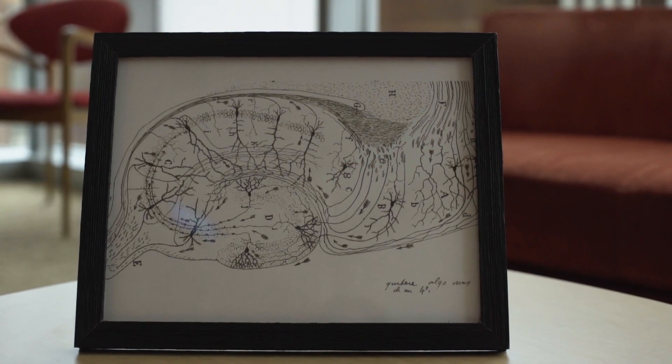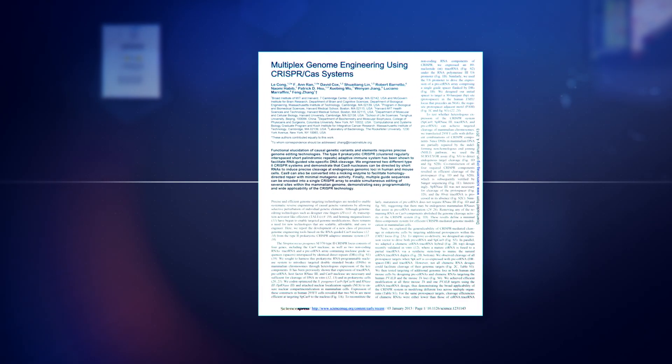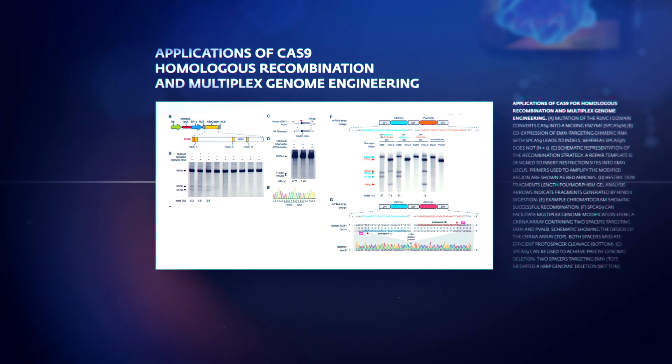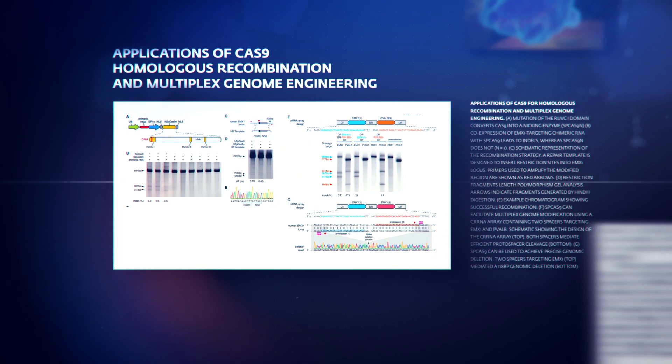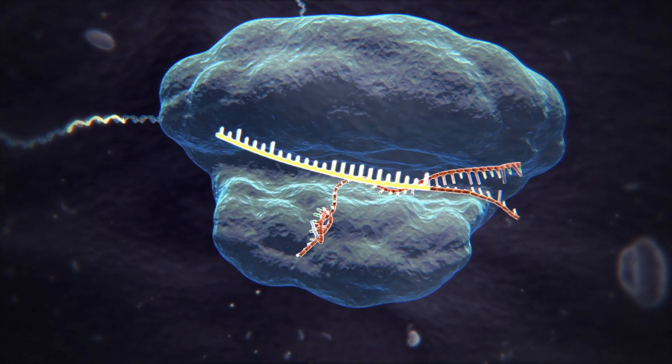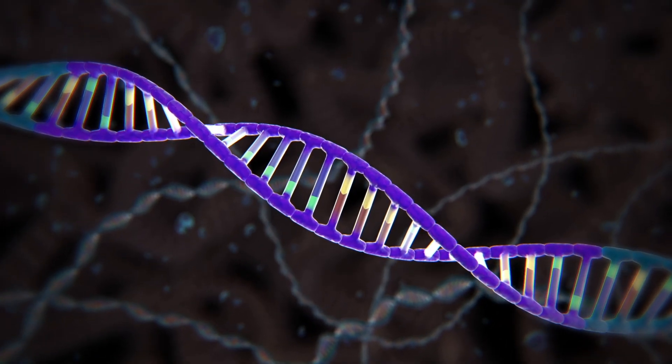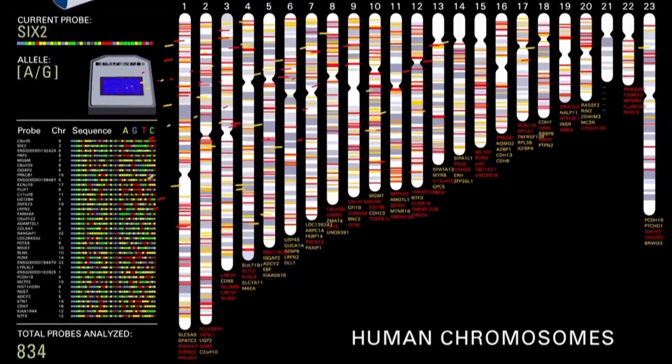I had heard about CRISPR and thought this is a really exciting system — maybe we can harness it. A paper that we published in early 2013 described how you can use the CRISPR system for gene editing. CRISPR uses a short RNA sequence to find the address in the genome, and the simplicity of being able to synthesize RNA makes genetic engineering a lot easier. That paper received a lot of attention and people have taken what's reported to use in their own experiments.